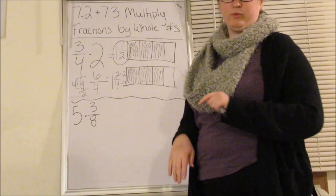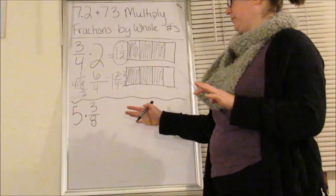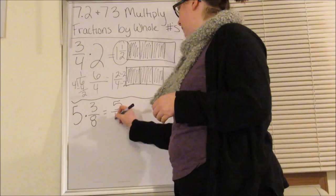Now, what if we don't want to draw a model? Because for my second problem, I have five times three-eighths. That's a lot of three-eighths to draw five. I don't really want to do that. I just want to multiply. The way I do this is I look at my numbers here and I start by putting my whole number over one. I want to make it into a fraction.